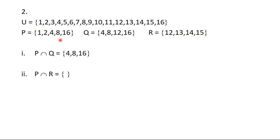Part ii says we should find P intersection R. There is no member in P that is also in R, so P intersection R is a null set. We explained what a null set is in the first video.